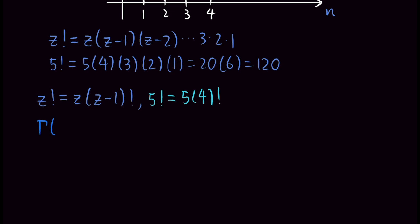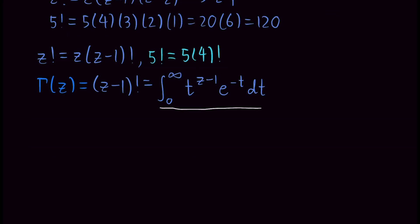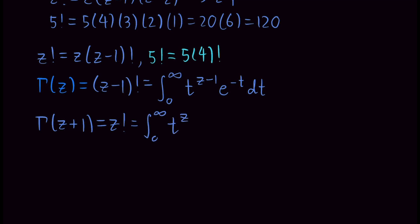We call this extension the gamma function, gamma of z. Gamma of z is defined to be z minus 1 factorial, which is equal to the integral from 0 to infinity — this is an improper integral — of t to the z minus 1 times e to the minus t, dt. I use t as the variable because it's a dummy variable. And gamma of z plus 1 equals z factorial, which is equal to the integral from 0 to infinity of t to the z times e to the minus t, dt.